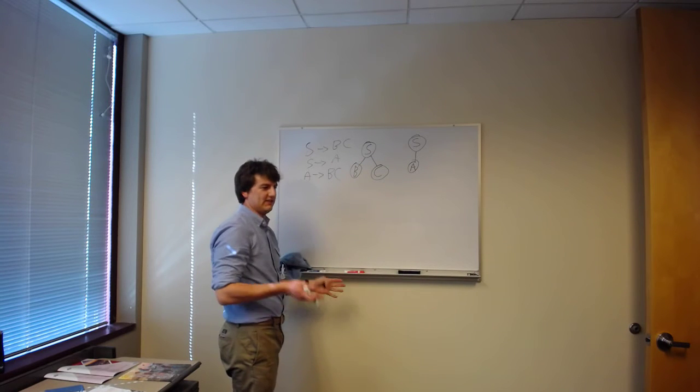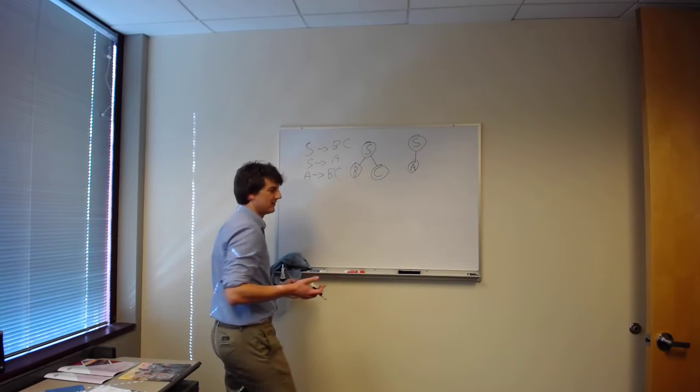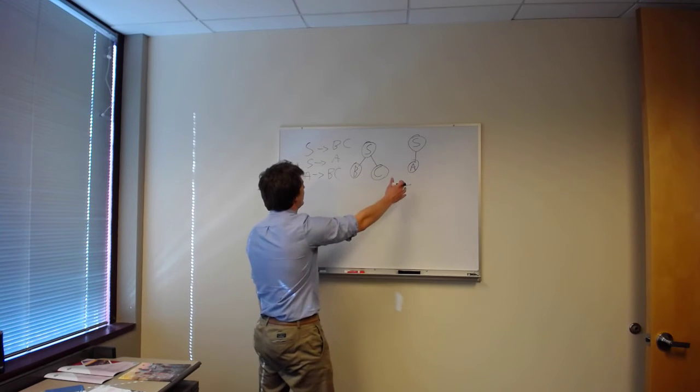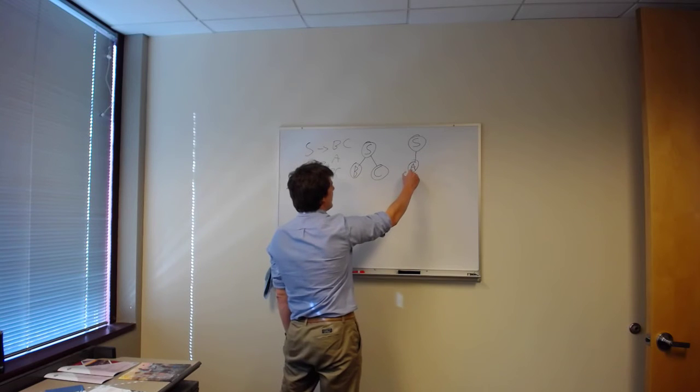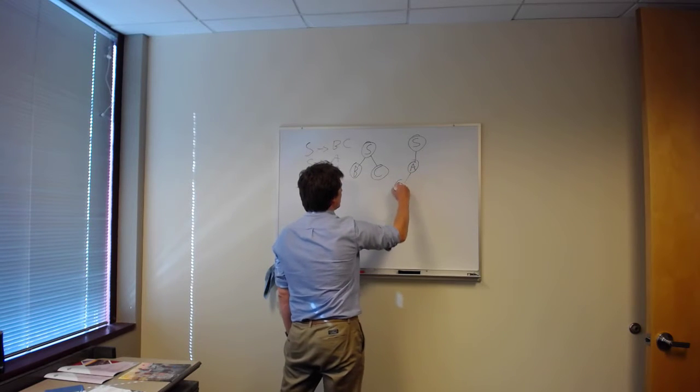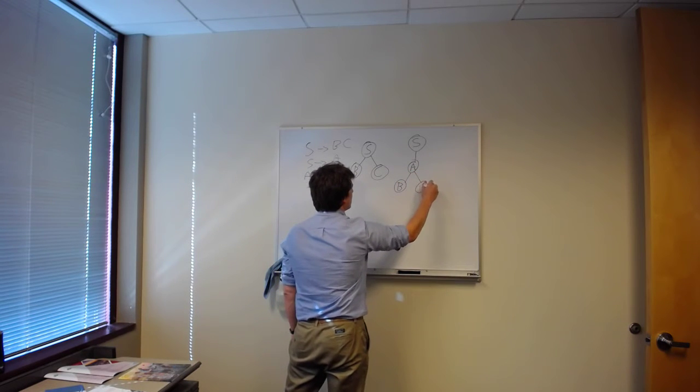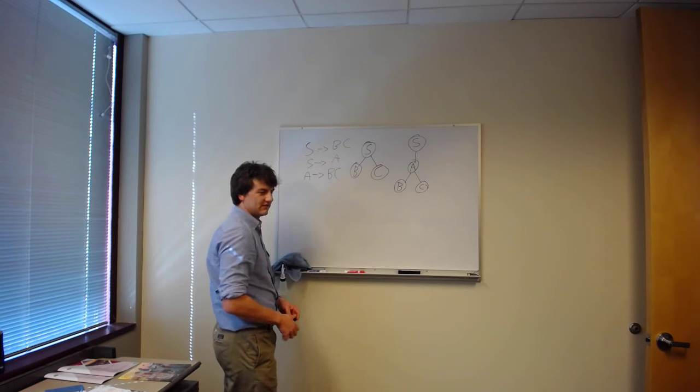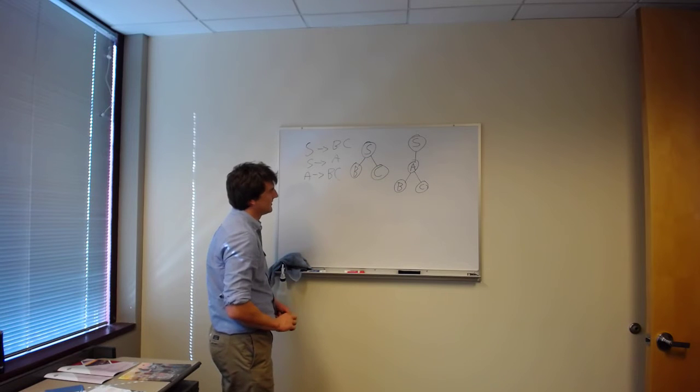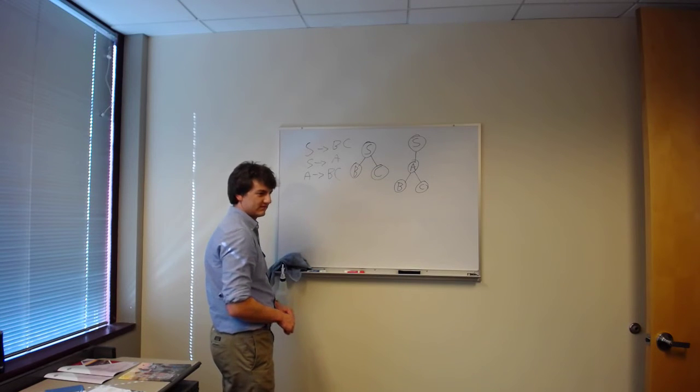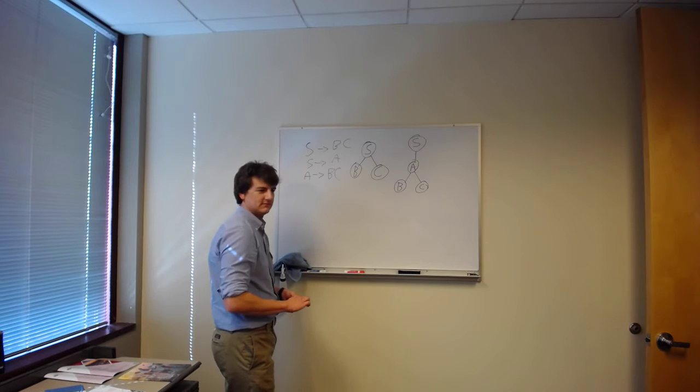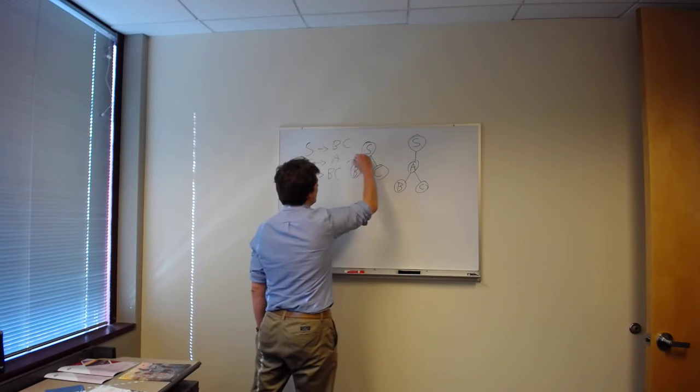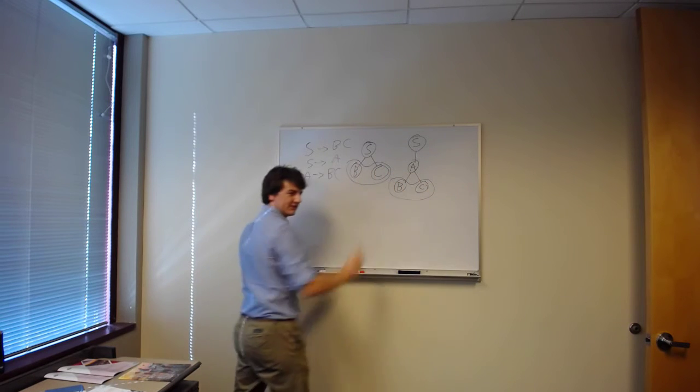I have no idea if they're going to result in the same string. Here, now if I apply one more rule, a goes to bc. Now what do I know about these trees? They're ambiguous. You can get the same thing from both those. Why? Leaves. Yes.